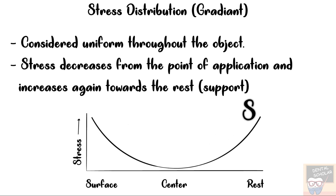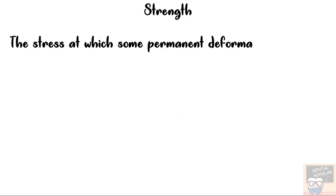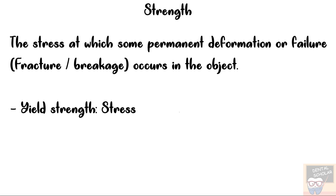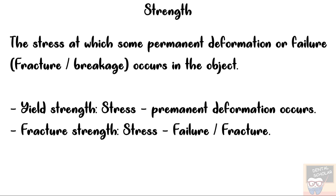Before going to different types of stresses and strains, let me tell you a little about strength. Strength is the stress at which some permanent deformation or failure — that is, fracture or breakage — occurs in the object. Yield strength is the stress at which limited initial permanent deformation first occurs. Fracture strength is the stress at which failure or fracture occurs.